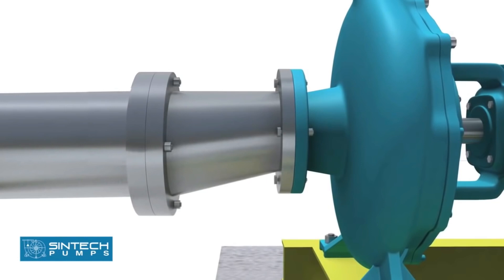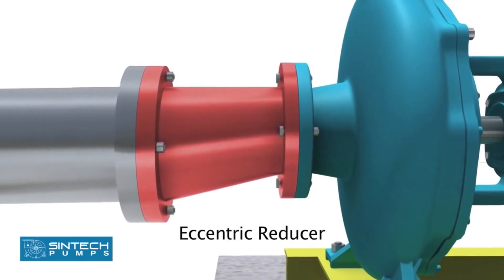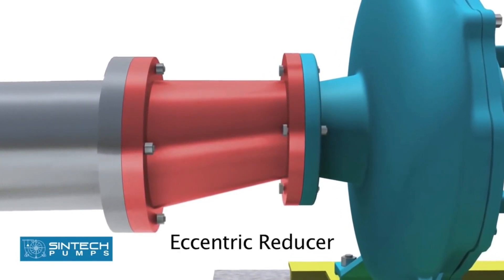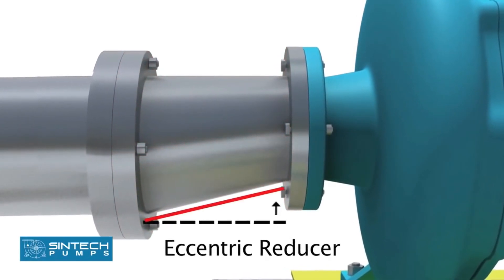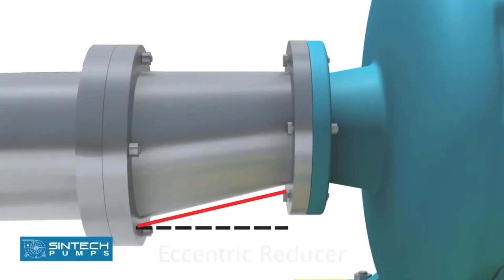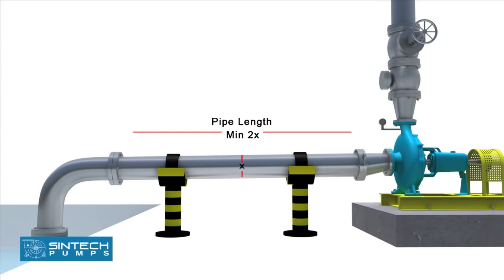The reducer joining the straight length of the pipe in the pump line should be an eccentric reducer with the inclined side of the reducer as the bottom side. The straight length of the pipe after the eccentric reducer should be two times of the pipe diameter.